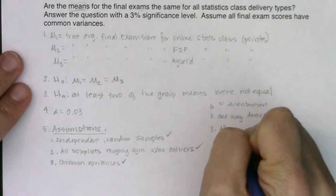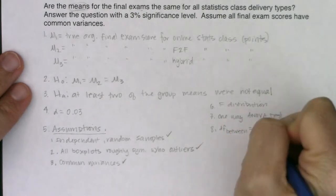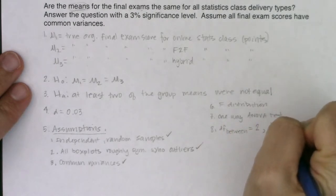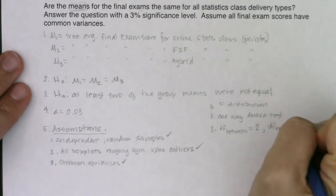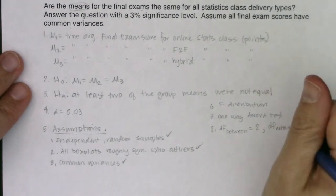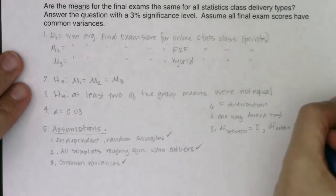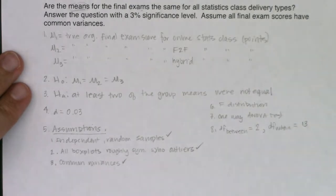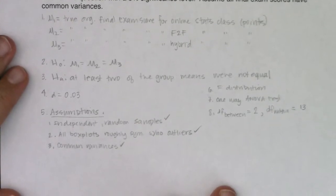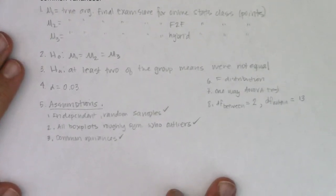Step eight, I need my degrees of freedom between and my degrees of freedom within. So my degrees of freedom between the three groups, well, I have three groups, so I lose a degree of freedom. So that's two. My degrees of freedom within the three groups. Well, I had 16 students, but I had three groups, so I have 13 degrees of freedom within. Moving from there, let me scooch this up just a little bit more.